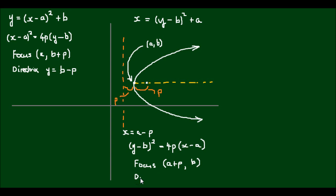And the equation for the directrix is going to be x equals a minus p. Alright, so let's do an example.